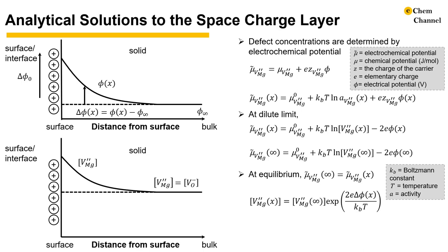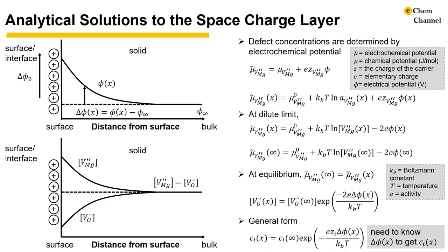Similarly, for the vacancy on oxygen sites, we have the same concentrations in the bulk as the vacancy on magnesium sites. And the near surface concentration follows a very similar equation to the previous one. More generally, the concentration of a species under the space charge effect is equal to its concentration in the bulk multiplied by this exponential term.